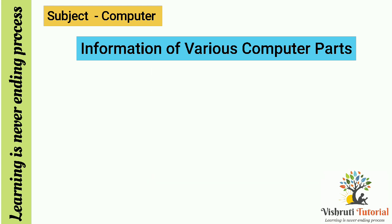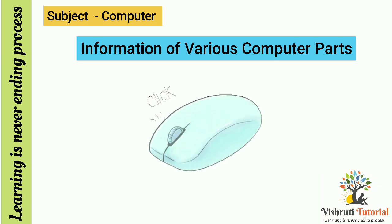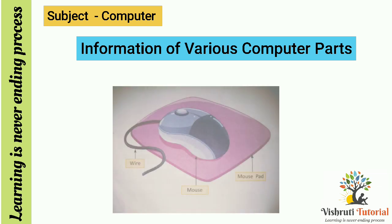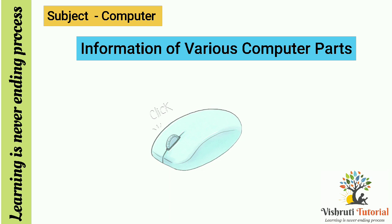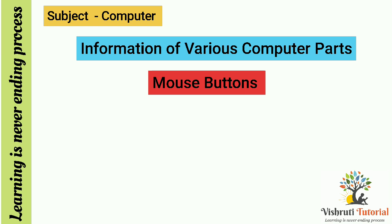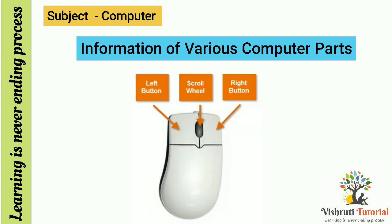Children, you have learnt about the keyboard. Now, can you name this? Yes, this is a mouse. A mouse is kept on a mouse pad. It has a long wire which is attached to the system cabinet. Nowadays, you also have a wireless mouse. A mouse usually has two buttons: left and right, and a scroll wheel.